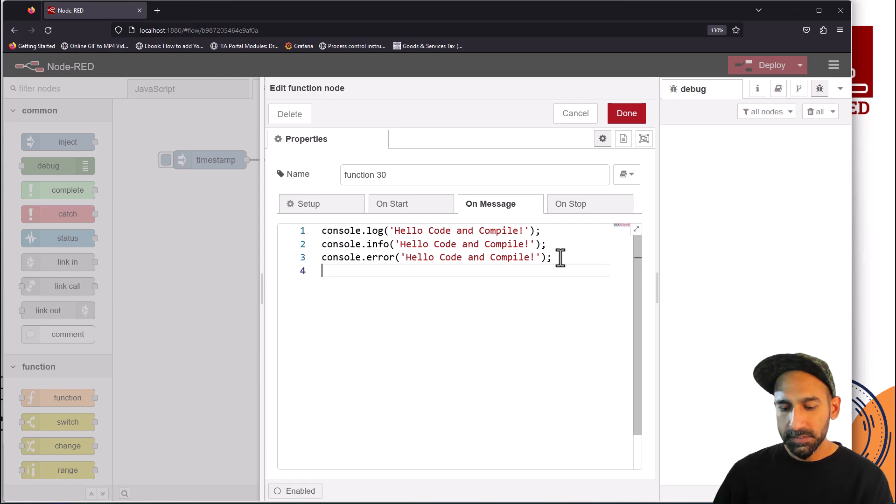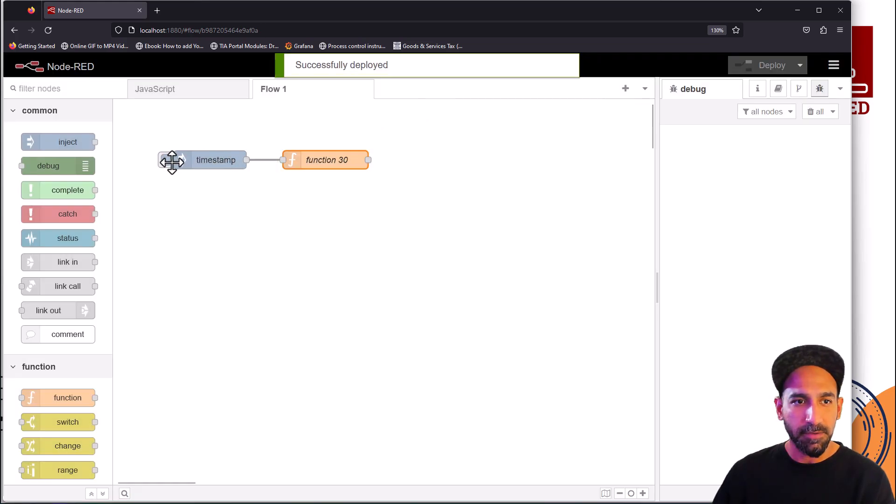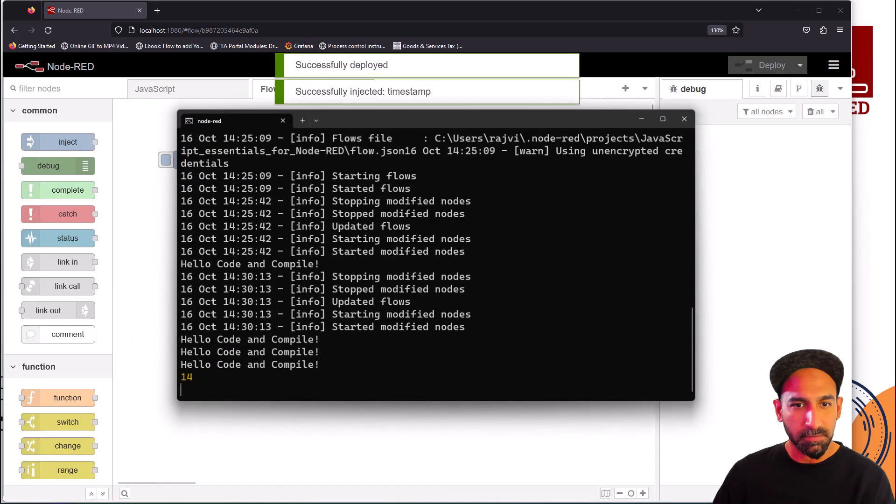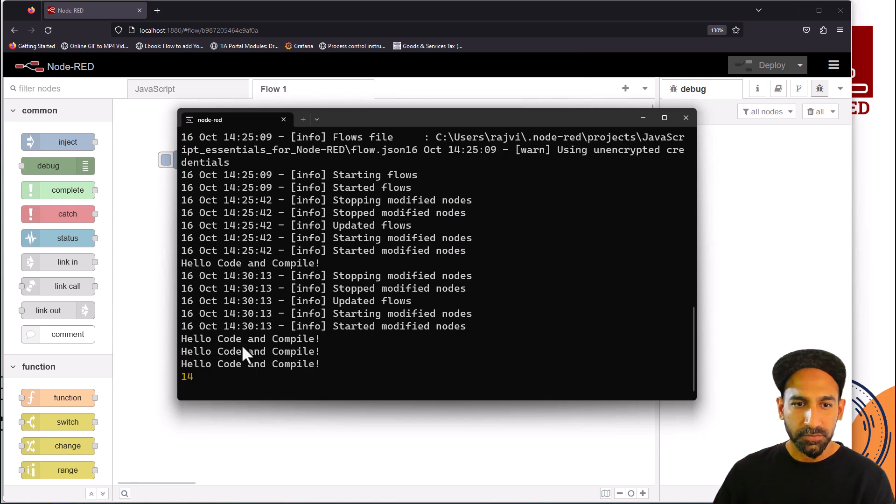JavaScript is a bit smart, it will automatically add that and display the result in console.log. Let's click done and deploy. When I see my terminal, you can see three outputs in string and one in integer.